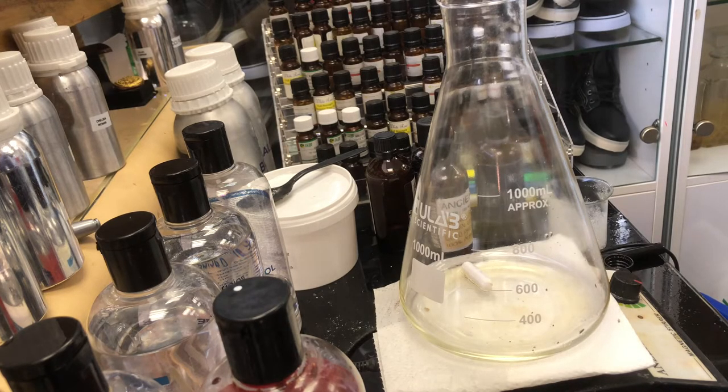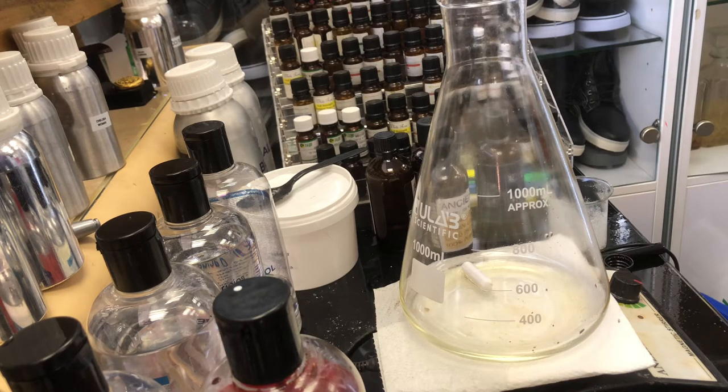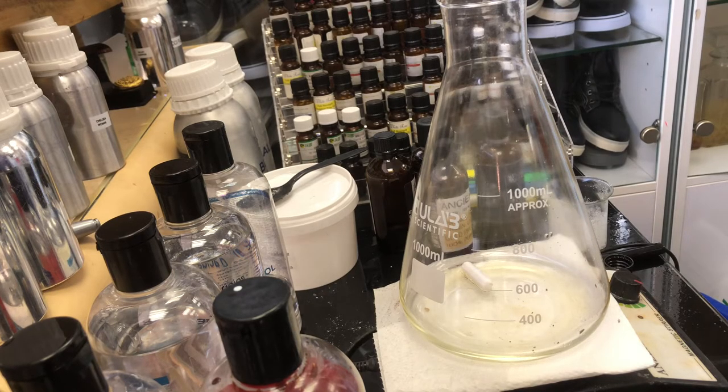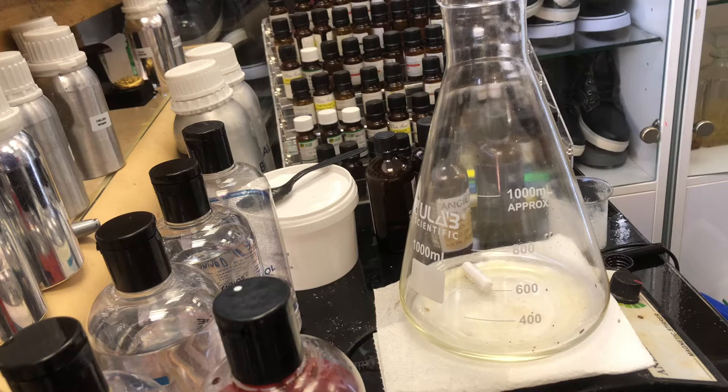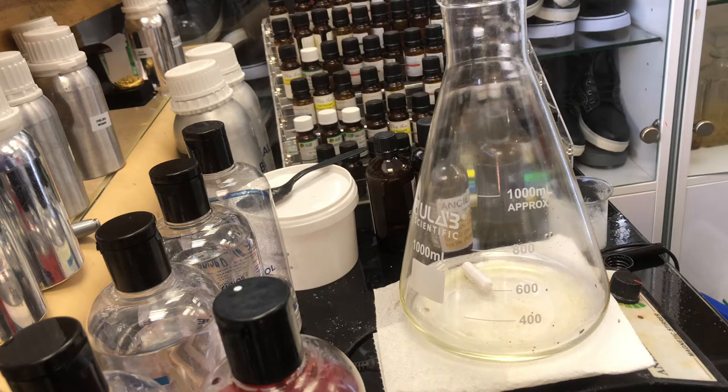For example, if you look at Baccarat Rouge 540, that's a prime product. One of the things hedion does is act as a solvent, so it has a lot of properties that bind different oils together perfectly.